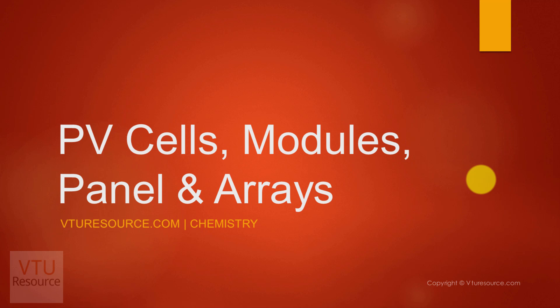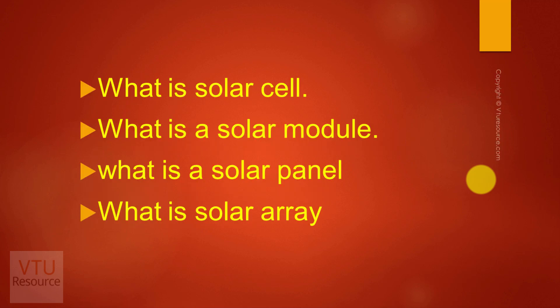PV cells, modules, panel and arrays. In our previous discussion we have discussed the construction and working of photovoltaic cells. Now let us see how photovoltaic cells are obtained in various forms. They are obtained as solar cells, solar modules, solar panel and solar array.